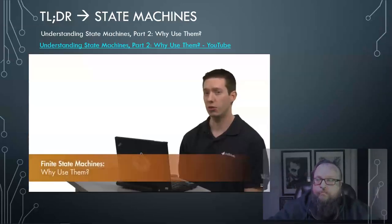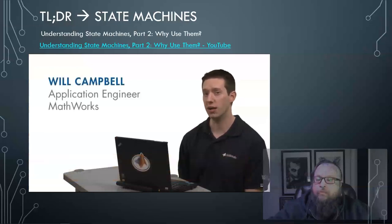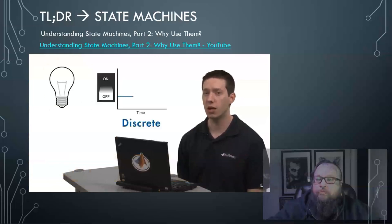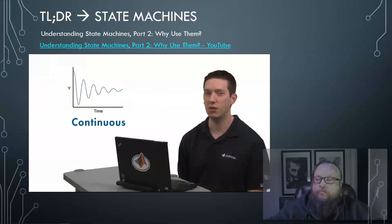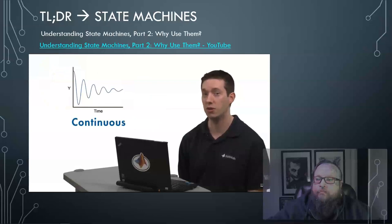In this session, we'll look at why finite state machines are useful to engineers, programmers, and scientists. It turns out that state machines are most valuable to systems with abrupt changes. If your system consists of nothing but continuous dynamics — with inputs that gradually change over time and behavior that doesn't switch instantaneously — then you probably don't need a state machine.